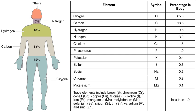Body composition may be analyzed in terms of molecular type, including water, protein, connective tissue, fats or lipids, hydroxylapatite in bones, and carbohydrates such as glycogen and glucose and DNA.